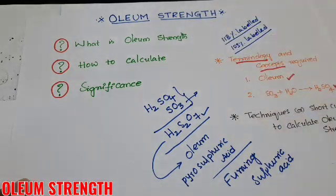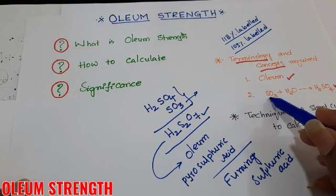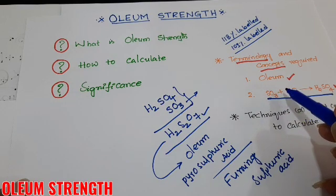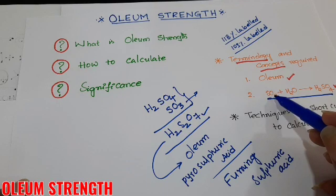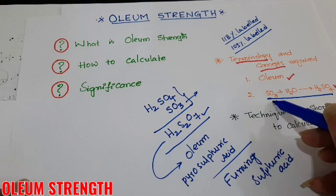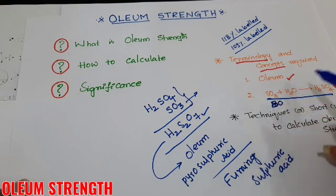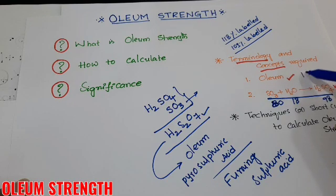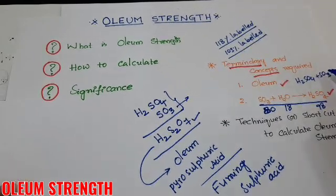Before discussing volume strength, students must understand this equation: SO₃ is present in sulphuric acid. When water is added to oleum, the SO₃ part reacts with H₂O to form sulphuric acid. The molecular weight of SO₃ is 80, and H₂O is 18; both react to form 98 grams of sulphuric acid.